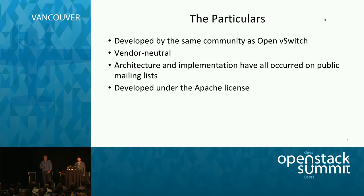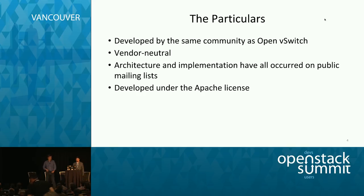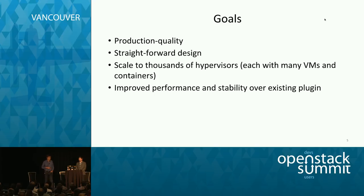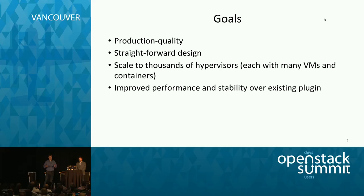OVN is being developed by the same community that developed OpenVSwitch. It's vendor-neutral — multiple vendors have contributed to both the architecture and implementation. All architecture and implementation have been done on public mailing lists — either the OVS dev mailing list or the Neutron mailing list. All source code is being released under an Apache license, just like OpenVSwitch. Our goals were to create something production quality that people could actually deploy.